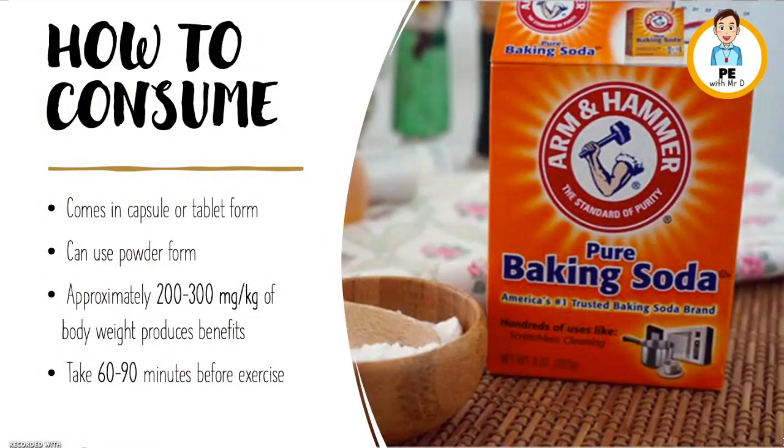So how do you consume Bicarbonate Soda? It mostly comes in powder form but you can also get it in capsule or tablet form. This is what it may look like. Consume approximately 200 to 300 milligrams per kilo of body weight and you should take this 60 to 90 minutes before exercise.